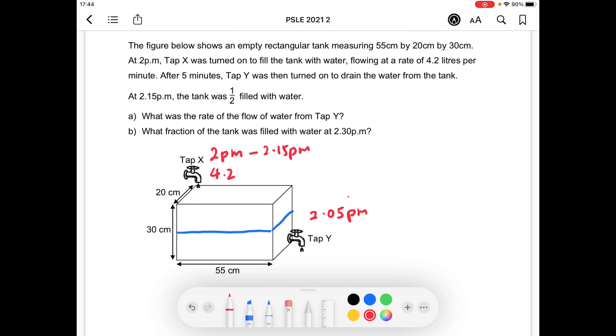A good 15 minutes. So to find out how much water has gone into the tank from Tap X in that 15 minutes, we can take 4.2 times 15 minutes to know that 63 liters of water has flowed from Tap X into the tank.